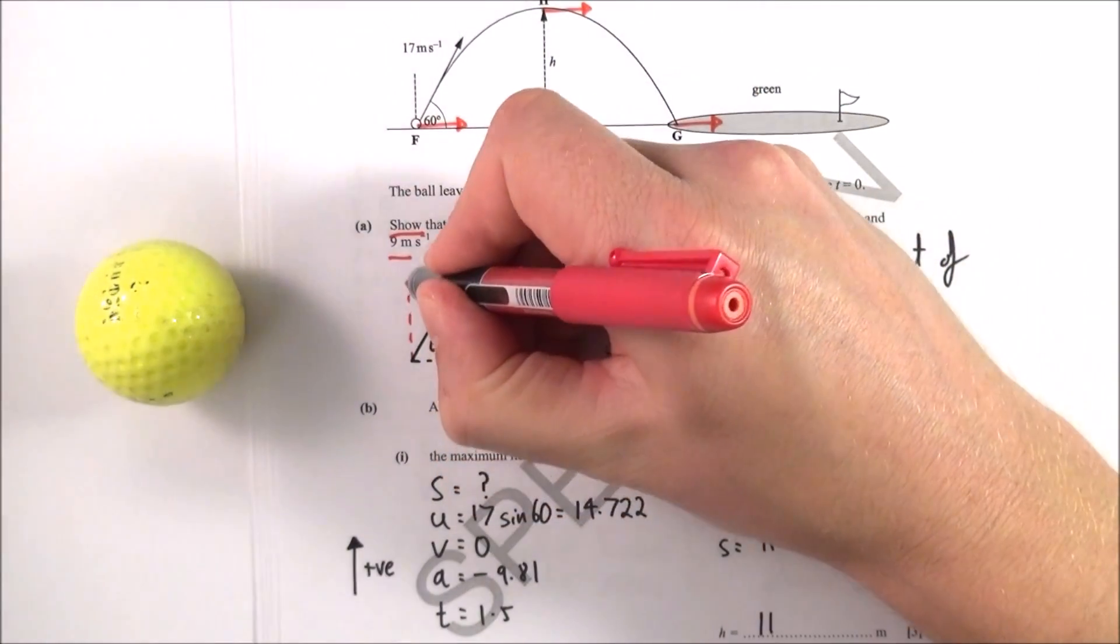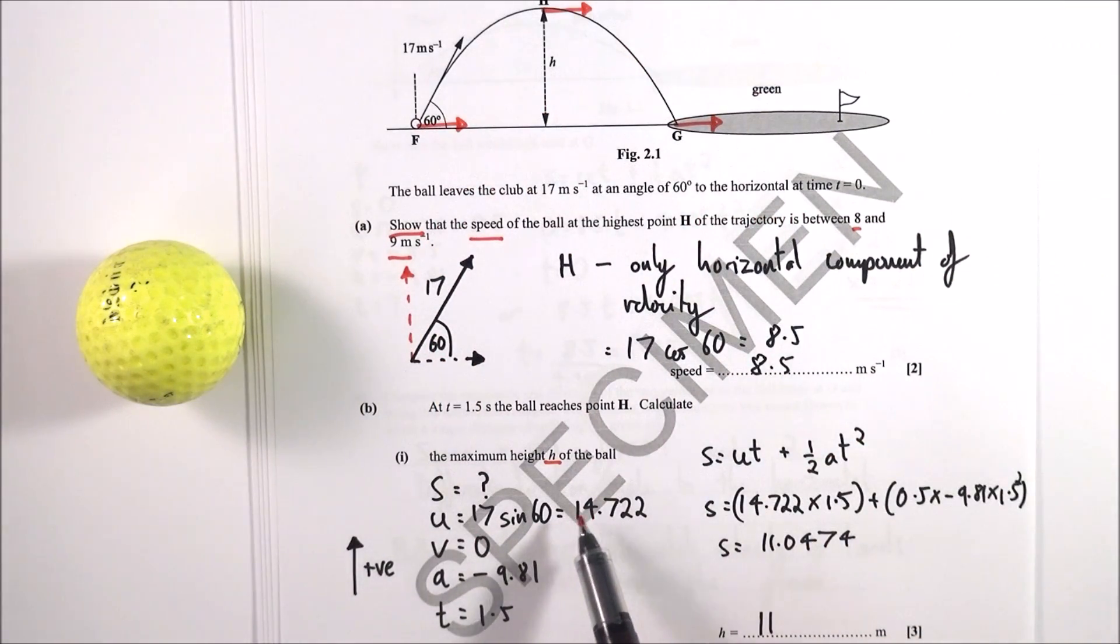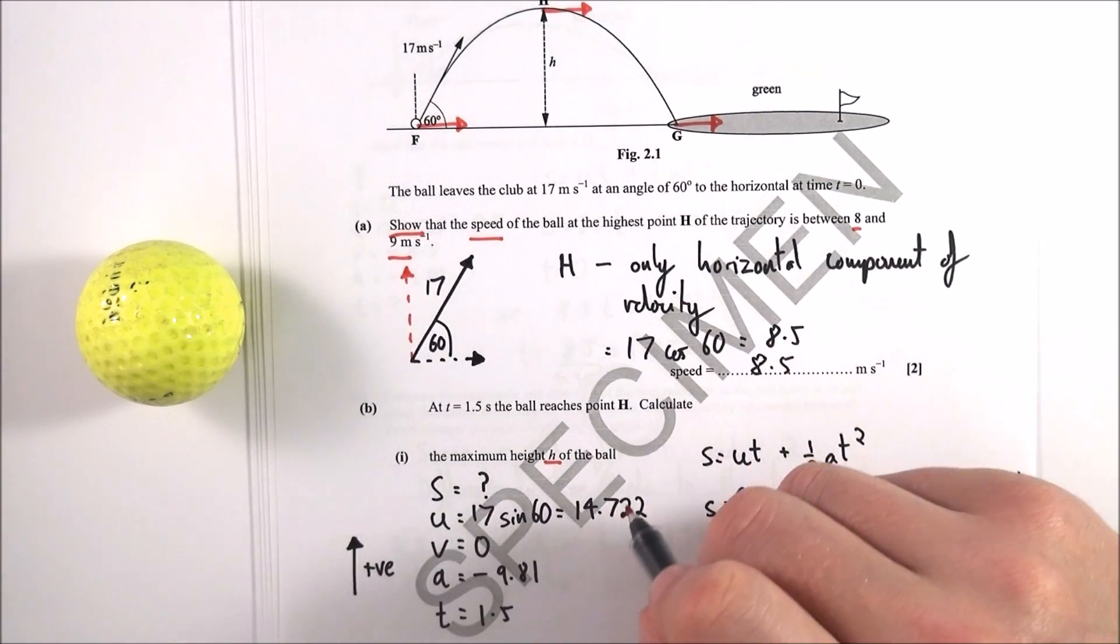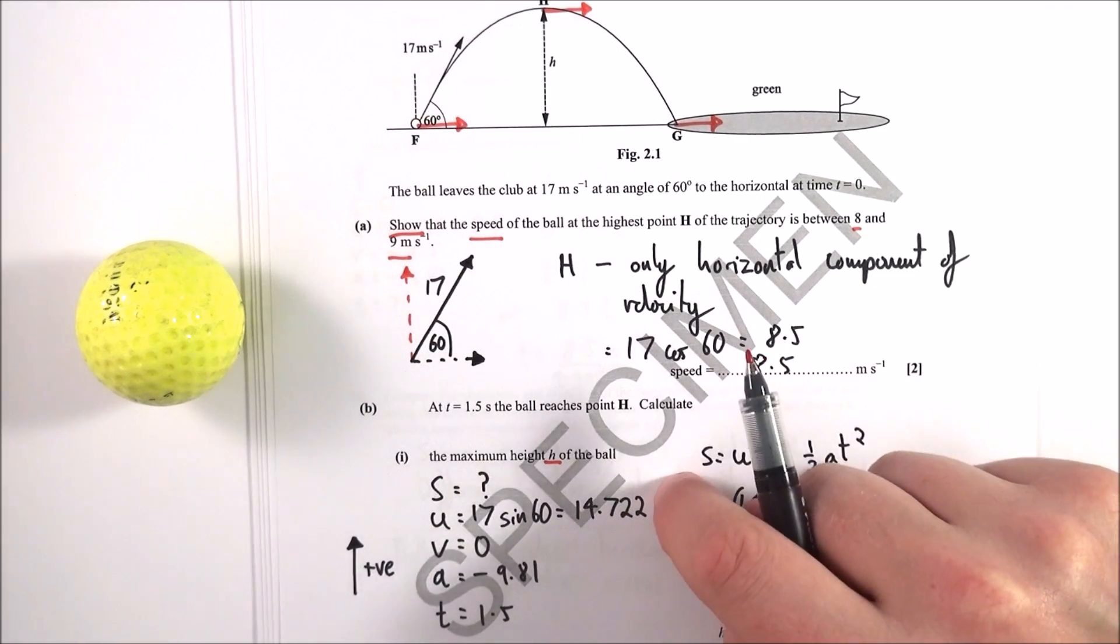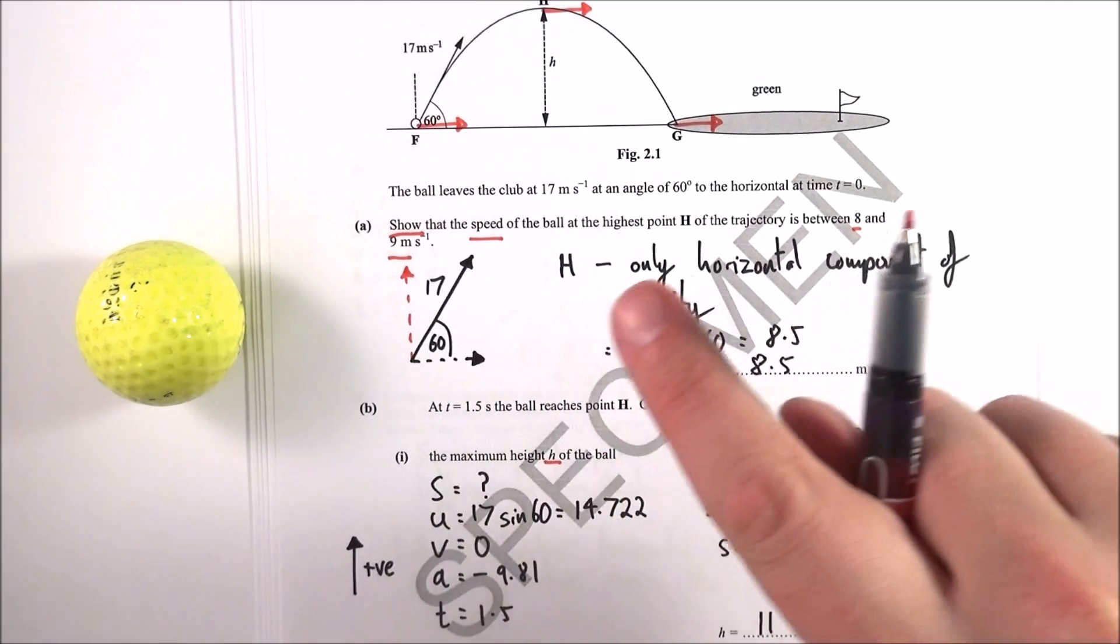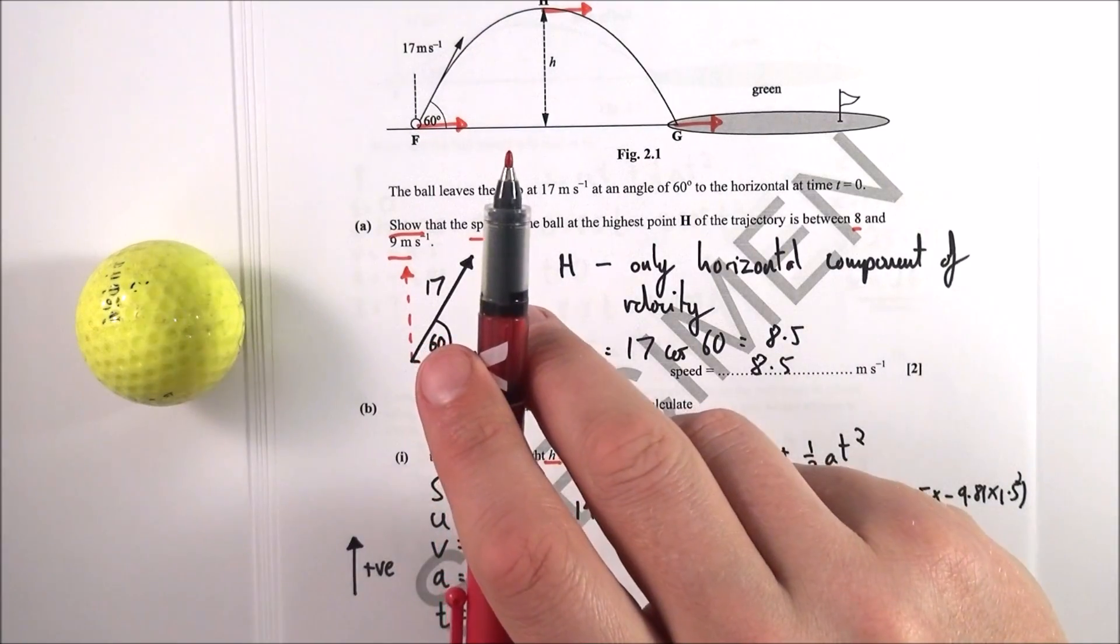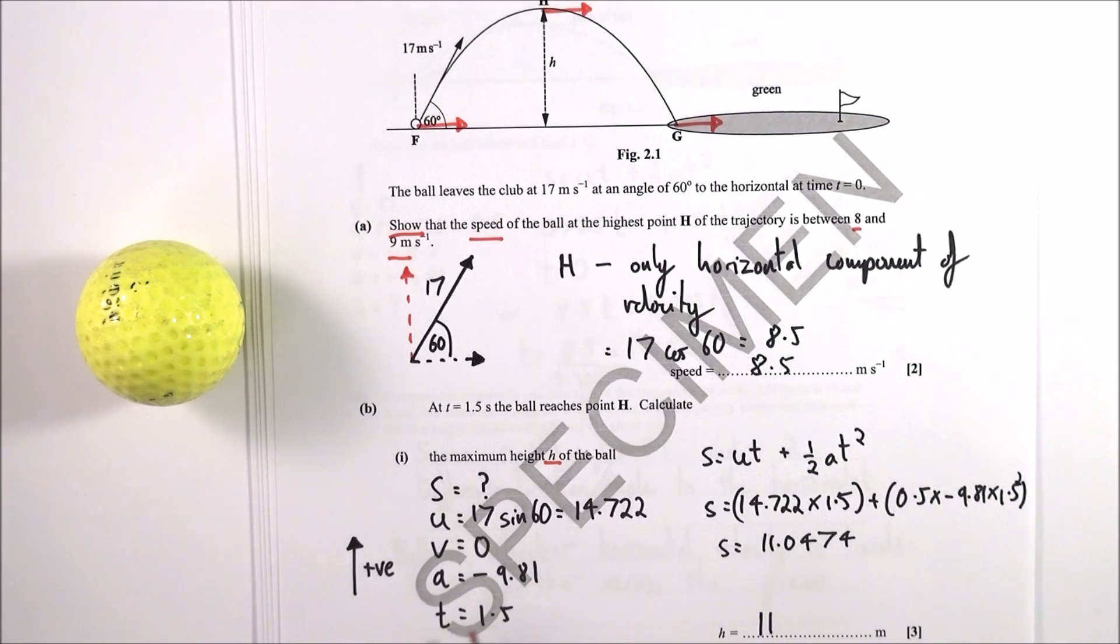What do we know? Well the initial velocity in the vertical direction is going to be equal to this velocity up here, and that's equal to 17 sin 60, which equals 14.722. I wrote it down like this but I actually saved the number in my calculator so I didn't round down too early. When it gets to the top, its vertical velocity is zero, so V is equal to zero. The acceleration is 9.81 meters per second squared, and because I said upwards is positive, that means downwards is negative, so that's why it's minus 9.81. And the time is 1.5 seconds, which was given to us in the question.